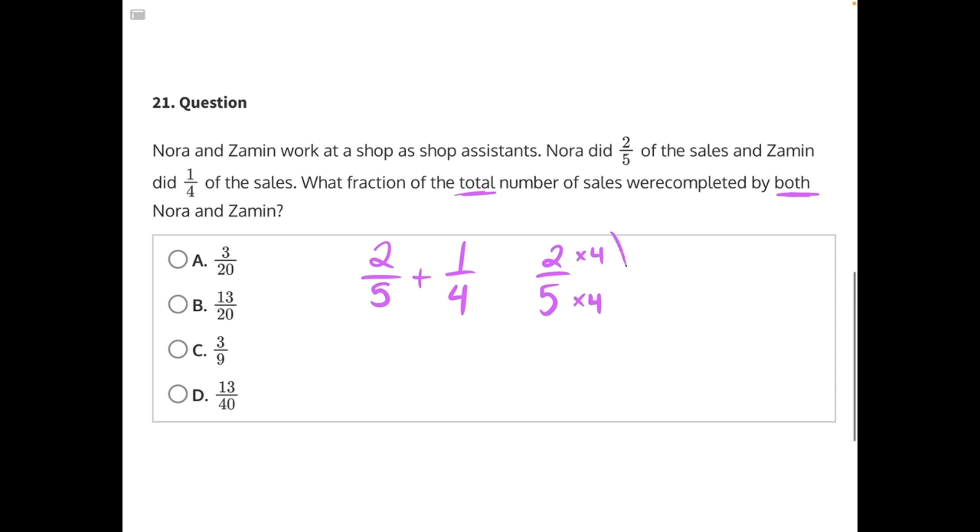We can multiply our first fraction by 4 over 4, and we can multiply our second fraction by 5 over 5.